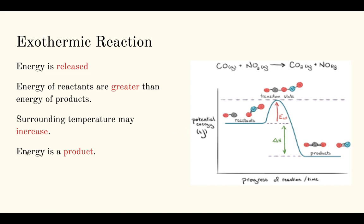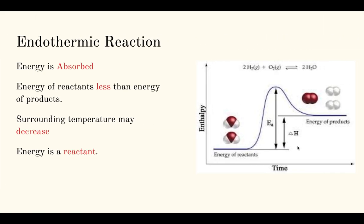In an exothermic reaction, energy is a product — the reactants have a lot of energy, and after the reaction, the products are lower energy, with energy released as another product. In an endothermic reaction, energy is a reactant — the reactants have low energy, and to get the energy up for the products, energy from the atmosphere or heat must be added, becoming part of the reaction.